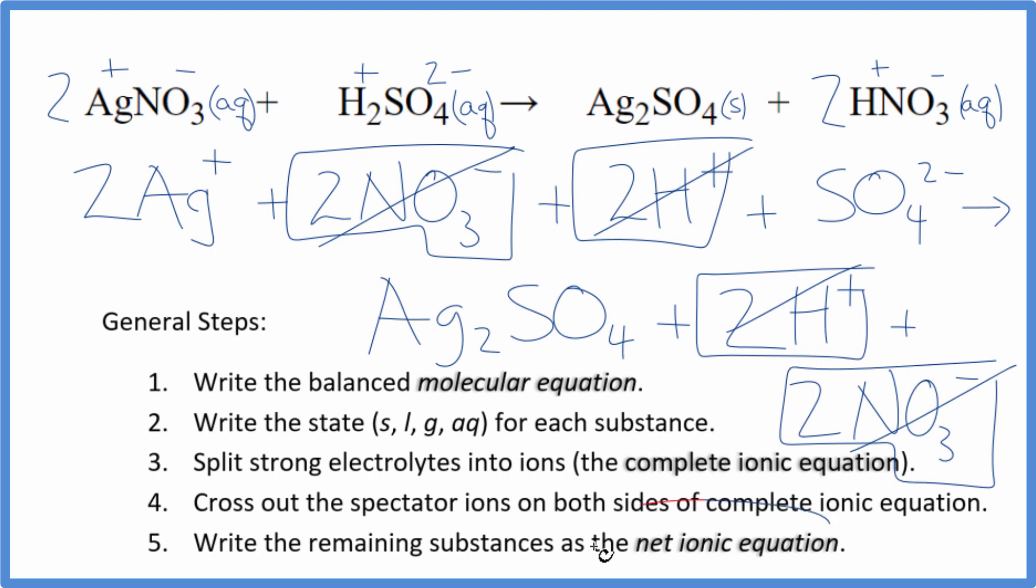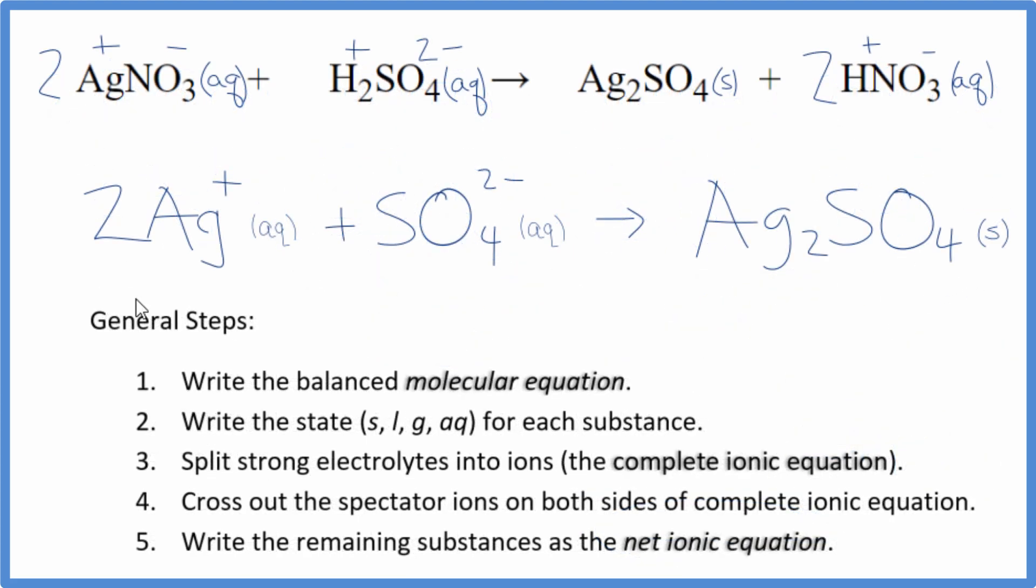What's left is the net ionic equation for AgNO3 plus H2SO4. This is the balanced net ionic equation for silver nitrate plus sulfuric acid. Note that charge is conserved - two times one plus is two plus, and we have a two minus. They add up to zero, so the net charge is zero. This is a neutral compound. The atoms are balanced too. This is the balanced net ionic equation for AgNO3 plus H2SO4. Thanks for watching.